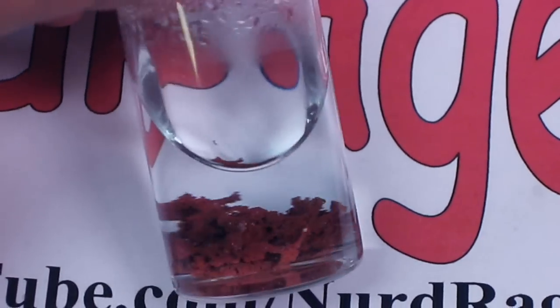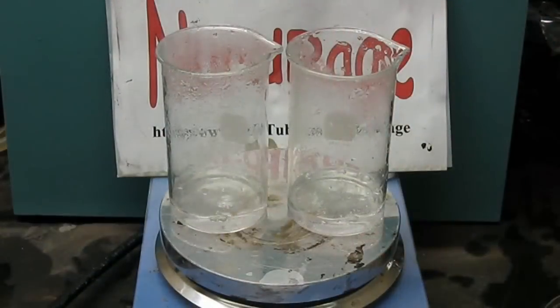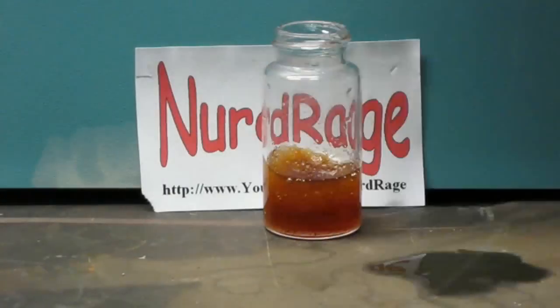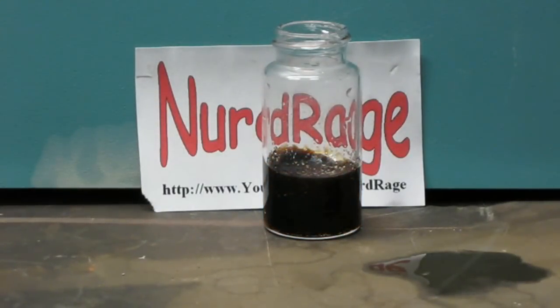Just filter off the copper and, similar to our previous video, boil down the dilute acid to concentrate it. It can be tested by mixing with sugar and seeing if it turns to carbon.